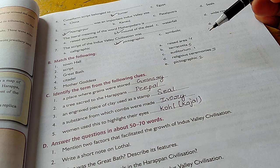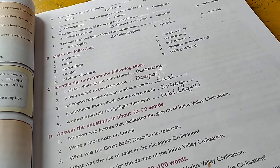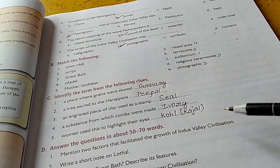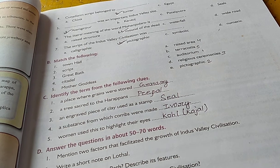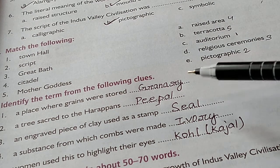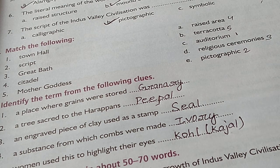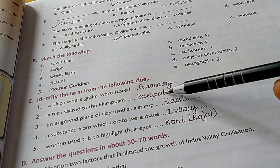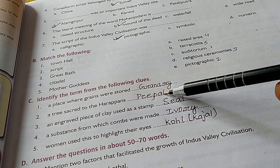Now the one word answers. A place where grains were stored - that place was called the granary. A tree sacred to the Harappans - that was peepal. We still say it's a really very sacred tree.